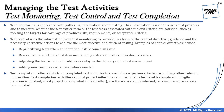Test completion collects data from completed test activities to consolidate experience, test ware, and any other relevant information. Test completion activities occur at project milestones — such as when a test level is completed, an agile iteration or sprint is finished, a test project is completed or even canceled or suspended, a software system is released, or a maintenance release is completed. That means completion is one of the major activities of the test process. We also have two types of reports: the test progress report and the test completion report.